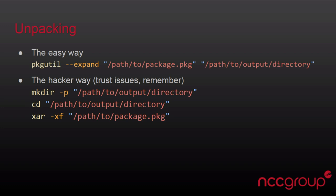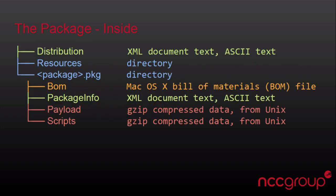We go into that directory because the way these are extracted works — it just outputs right into the current working directory. So now we're going to go through and extract the package files. After you've extracted them, this is sort of the typical structure you find inside: you have a distribution XML file, you have a resources directory, and then you have one or more package directories.